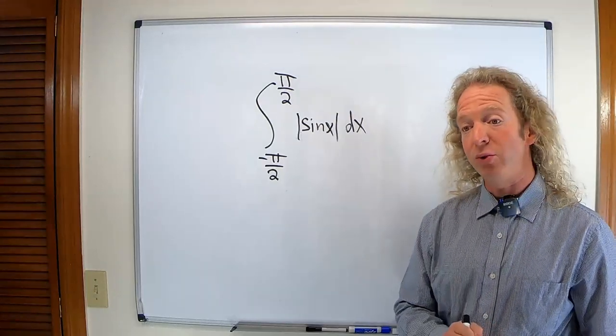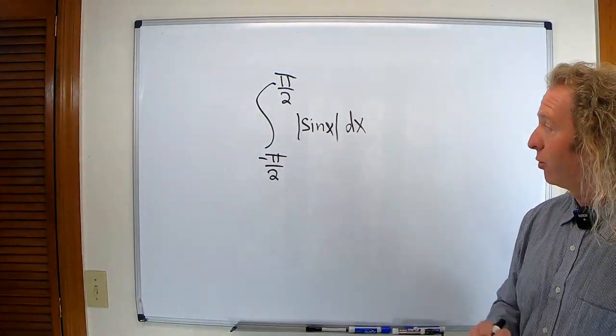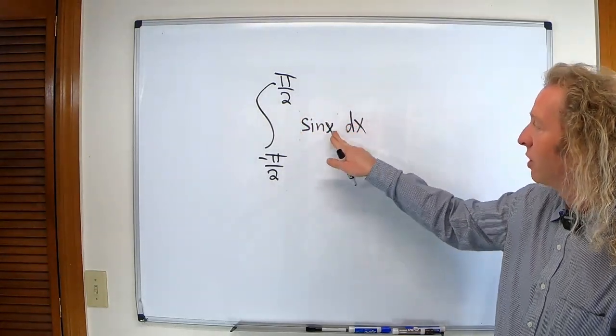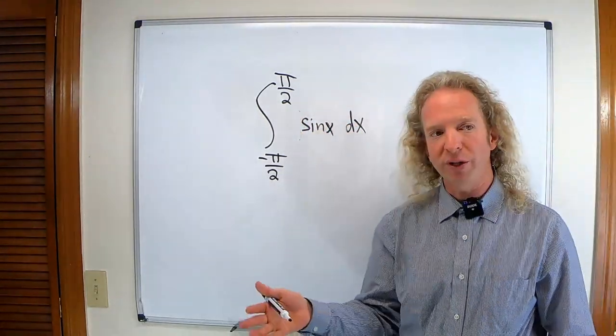So the best way to integrate the absolute value of sine x is to simply erase the absolute values. You can do that because you don't really need them there.